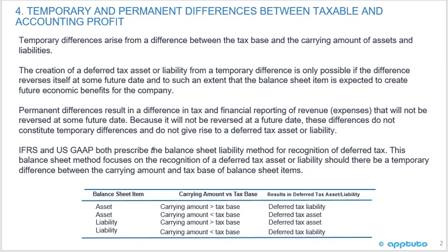We've seen a few examples. A company might receive interest income on tax-exempt bonds — it appears on the financial statements as interest income, but it's not taxable. Certain dividends may also not be taxable. So there are items that may be on the income statement but are not on the tax return and are not taxable, making them permanent differences. There may also be items on the tax return that are not relevant on the income statement, also giving rise to permanent differences.